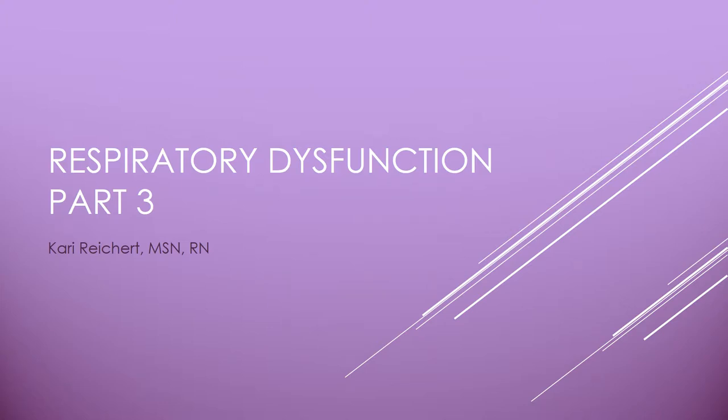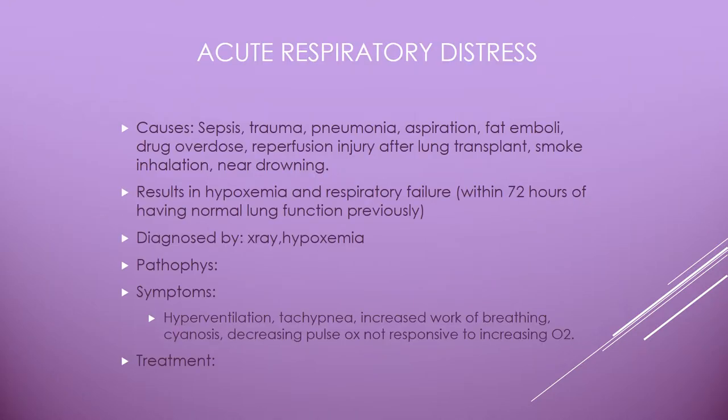Welcome back to part three. Acute respiratory distress is a life-threatening lung inflammation that results from direct injury to the lungs or from some type of systemic injury. It is diagnosed by bilateral alveolar infiltrates, the absence of left-sided heart failure, and hypoxemia. The hypoxemia is diagnosed not by pulse ox but by the PaO2/FiO2 ratio that is less than or equal to 200 for ARDS.